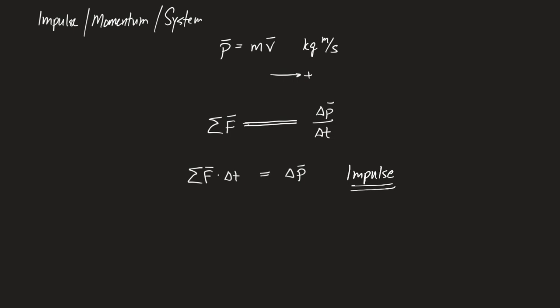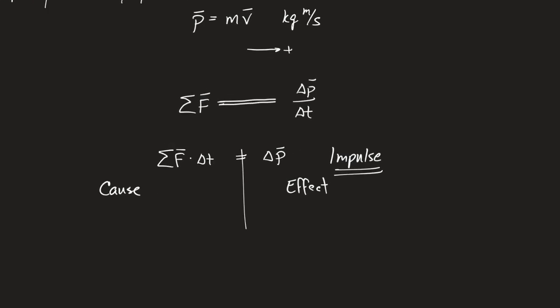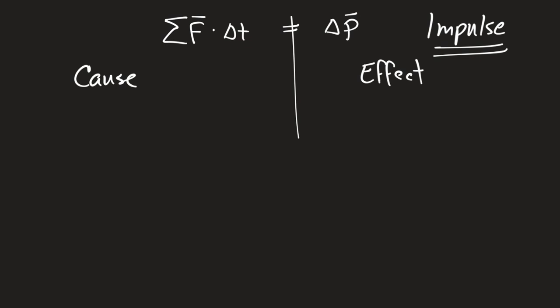Impulse isn't just one thing — impulse has a cause and an effect side. The left side is the cause side of impulse; the right side is the effect. If you're asked to calculate the impulse, either side will do — it's like the work-energy theorem, where you can calculate the work done by calculating the change in kinetic energy, or by doing force times distance. Here I'm giving you a similar thing for momentum: when I ask for the impulse, I'm asking you to calculate either force times time, or the change in momentum — they mean the same thing.